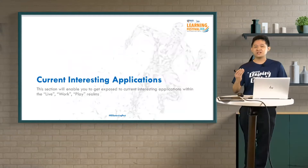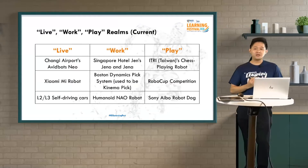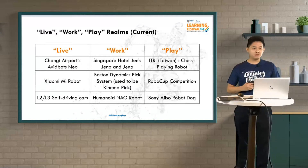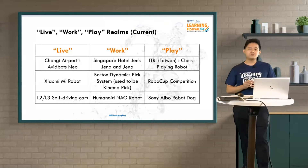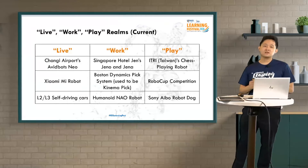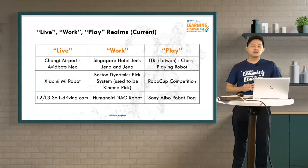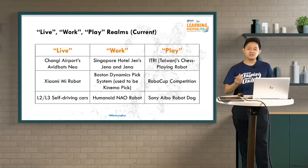Let me run through some current interesting applications you may or may not have come across. At home — in the live spectrum — we have our chunky airport cleaning robot, and some of us have the Xiaomi Mi robot vacuum at home. If you have the chance to go to one-north, you can see the company Neonatomi with their self-driving cars driving around. In the work spectrum, at Hotel Jen you can see two service robots, Geno and Gena. In factories and warehouses, you'll see many manipulator robots. In the play spectrum, you have robots that play chess with you, robots that play soccer, and robots that can replace your pet at home such as dogs.